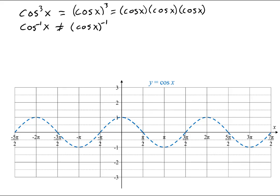But the negative 1 is another matter. If you put the negative 1 outside the parentheses, it means one over the cosine, which is the secant. That's the reciprocal function.